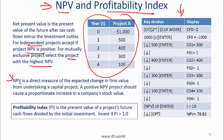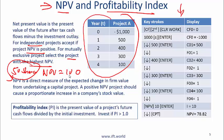NPV is a direct measure of the expected change in firm value from undertaking a capital project. A positive NPV project should cause a proportionate increase in a company's stock. For example, if the NPV from a project is 100 and the company has 50 shares, then because of this positive NPV the per-share price will go up by 100 over 50, which is 2. So this positive NPV is distributed across the 50 shares.